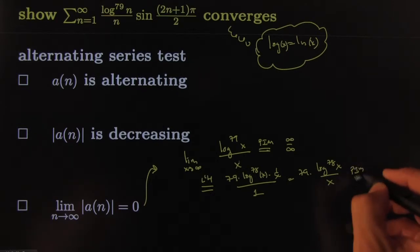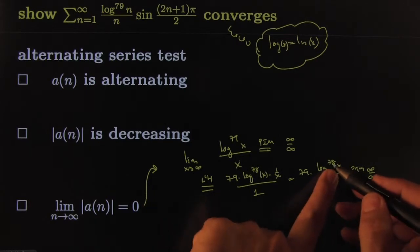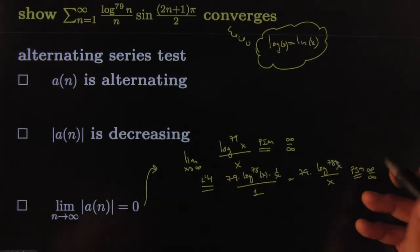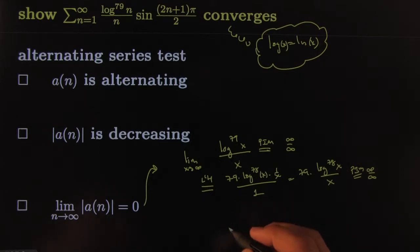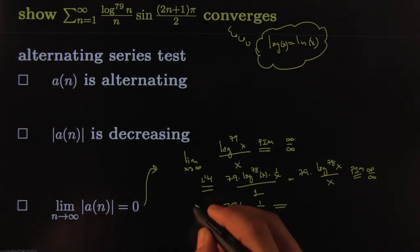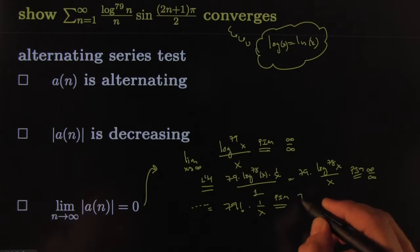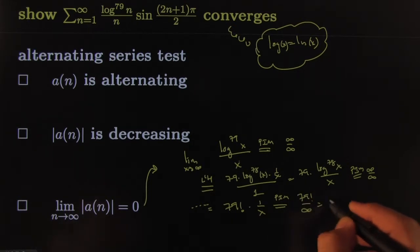Of course, and all that over 1. And that would give you 79 times log 78 x all over x. Now, if you try the plug-in method again, you get infinity over infinity. But, of course, you've made it just a little bit easier because this is now 78. You can imagine this will go on forever. And you will get 79 factorial, which would be 79 times 78 times 77, and eventually times 1 over x, which, of course, after a lot of L'Hopitals. And then you try the plug-in method, and this will give you 79 factorial over infinity, which will give you 0.